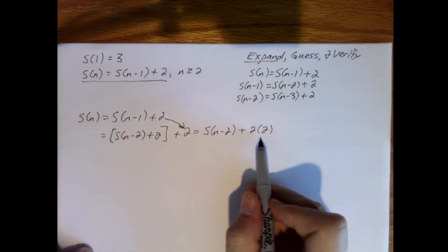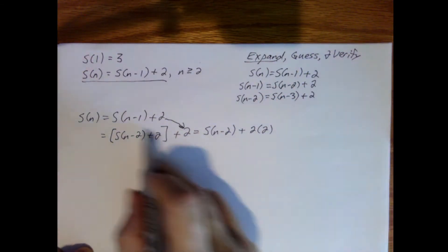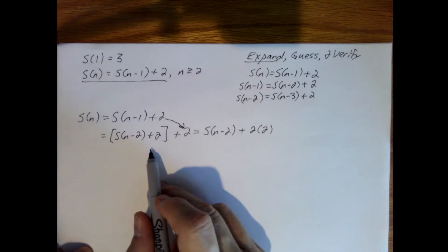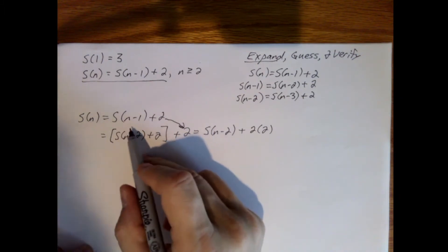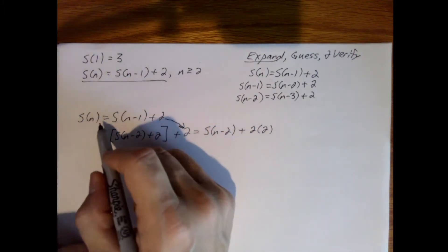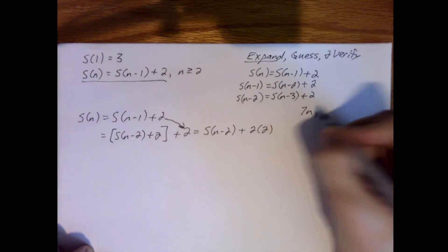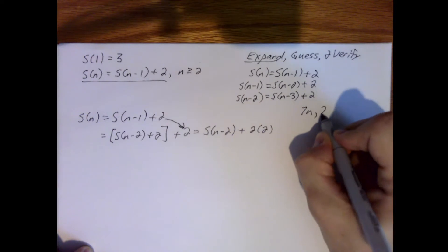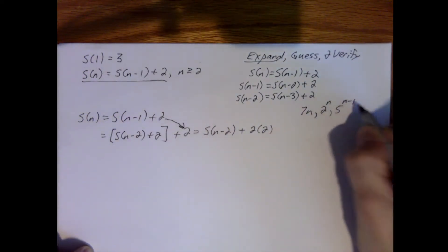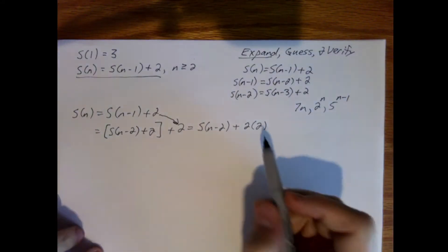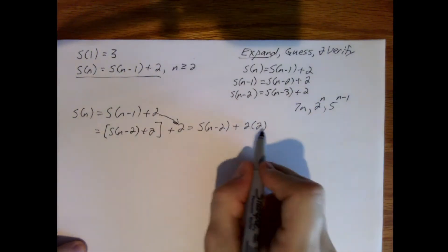Why write it as 2 times 2 instead of 4? Well, ultimately when we get to the guess step, we need to recognize a pattern that shows how the value of n relates to the overall value. In lots of cases you'll have a term like 7 times n, or 2 to the nth power, or 5 to the n minus 1 power. If I replace this with 4, I may not be able to see what the pattern is — that's the reason.